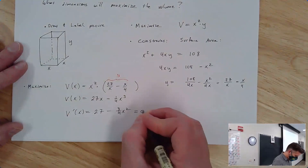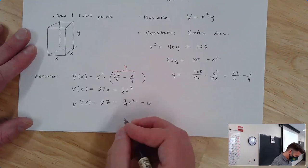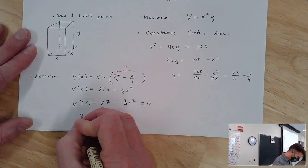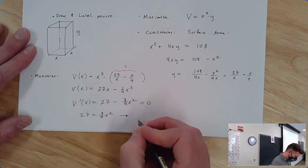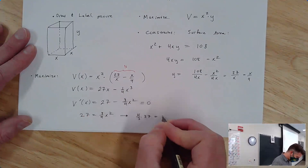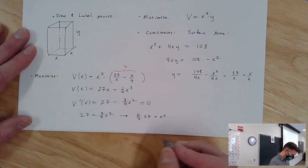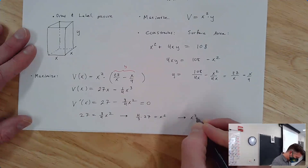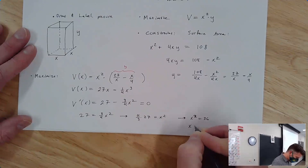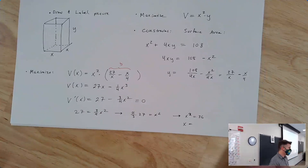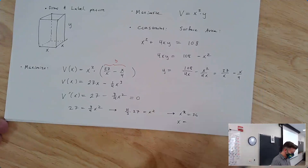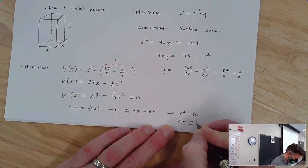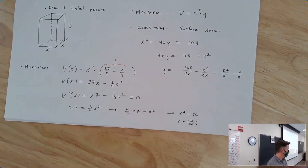Setting the derivative equal to zero and solving for x: 27 equals three fourths x squared, multiply both sides by four thirds to get x squared equals 36. The solutions are plus or minus six, but it doesn't make sense for the side of a box to be negative, so x equals six.